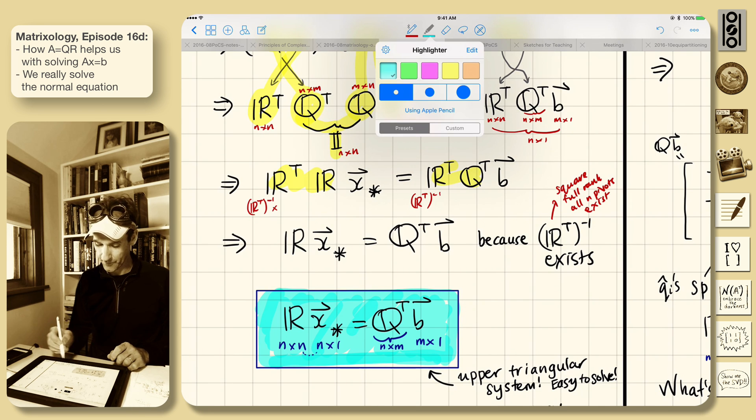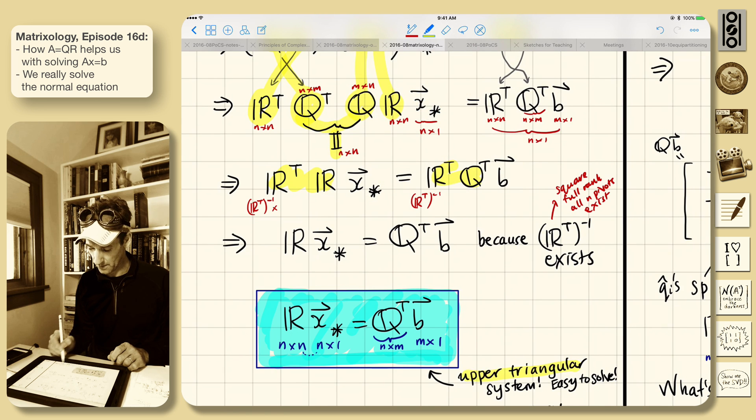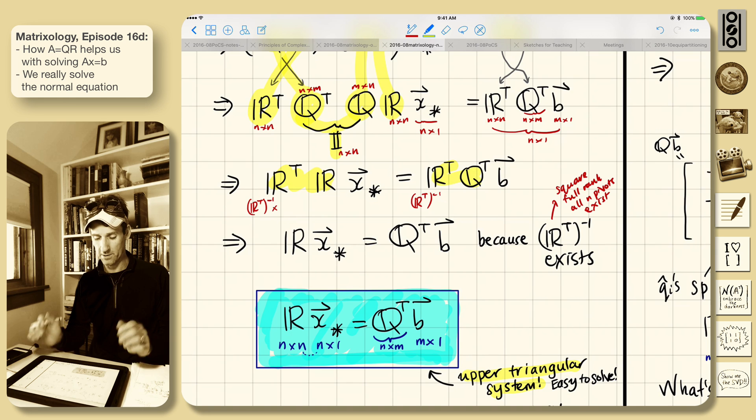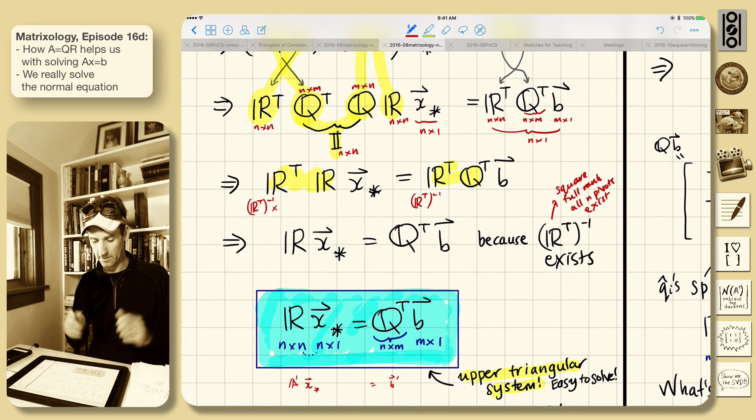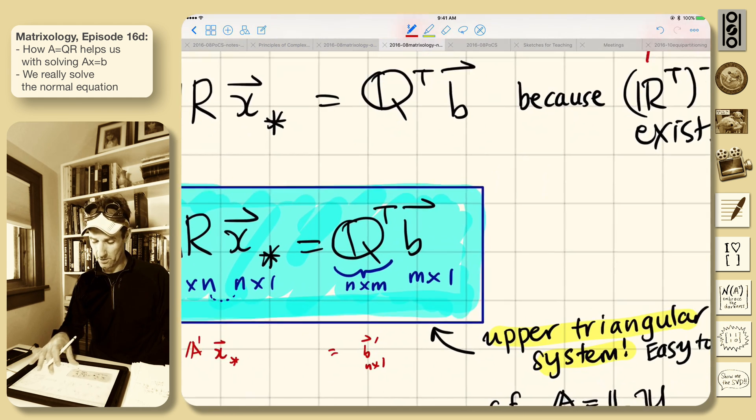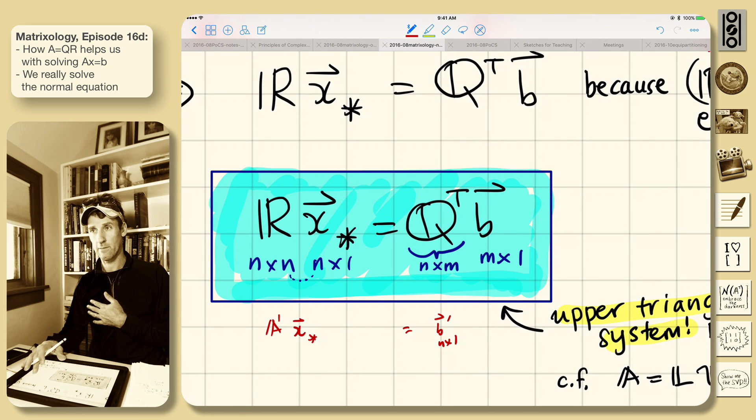And why is that good? Because R is an upper triangular system. It's upper triangular. It's easy to solve. It's a triangular system. And we just multiply it. We find this kind of modified B on the right hand side. So this is of the form AX equals B. There's some square matrix. So it's all good. This is an M by one. So that's all very good. Now it's the normal equation. So we're happy with that.